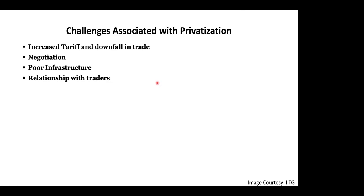The last observation regarding challenges was the relationship with traders. The private entity is not able to build interpersonal relationships with traders. One reason could be language — traders speak Assamese, but employees of the private company are not from Assam and cannot speak Assamese. Traders had a good interpersonal relationship with IWT officials because they could speak Assamese.